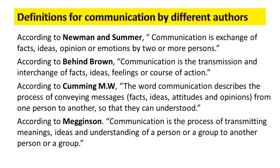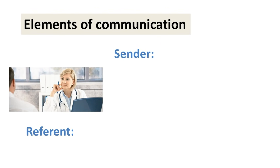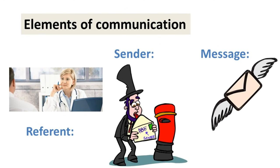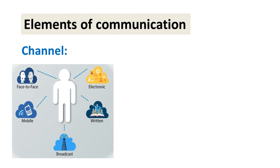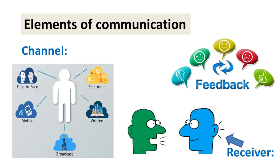The overall definitions tell us that communication is a way of exchanging ideas, knowledge and thoughts from one person to another — it's a way by which people make others understand what they want to tell and express. After definitions, we will move toward elements of communication. The elements are: first, referent; second, sender; third, message; fourth, channel; fifth, receiver; and finally sixth, feedback.